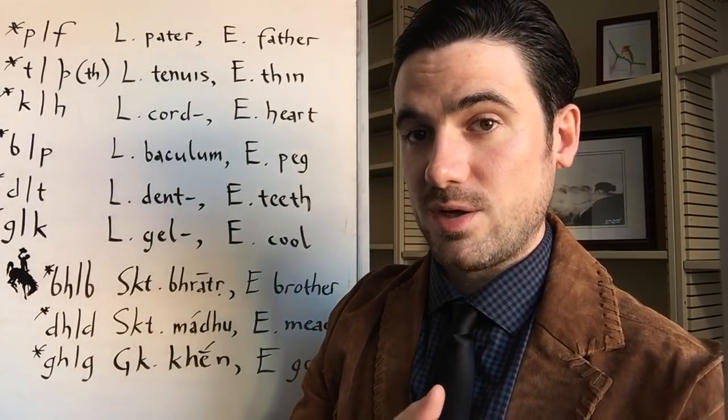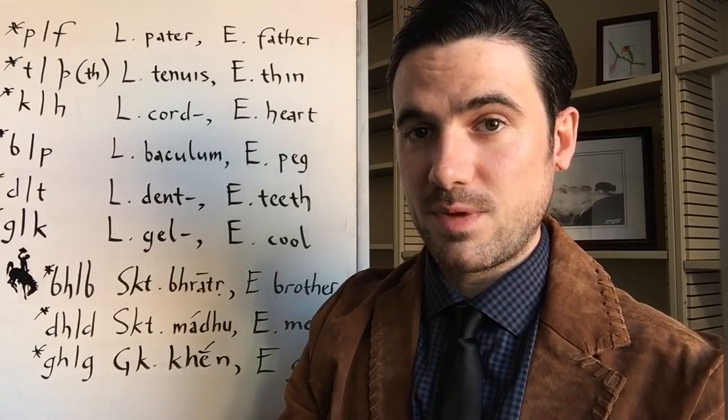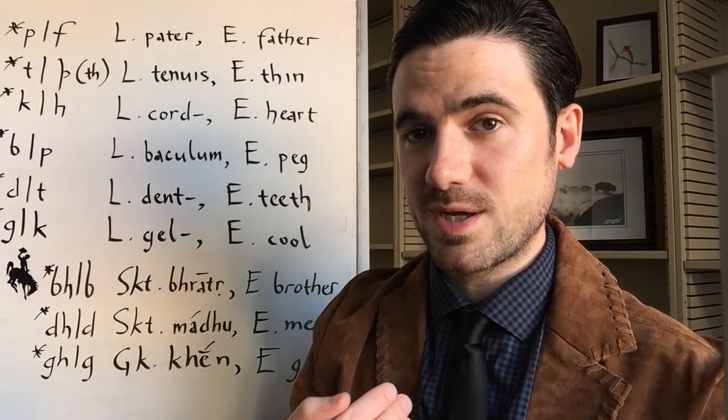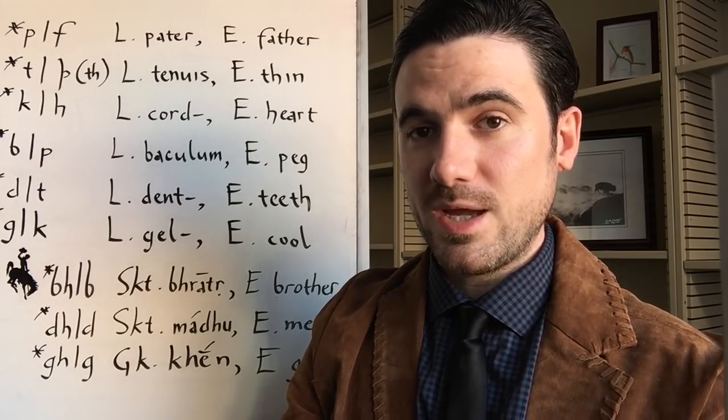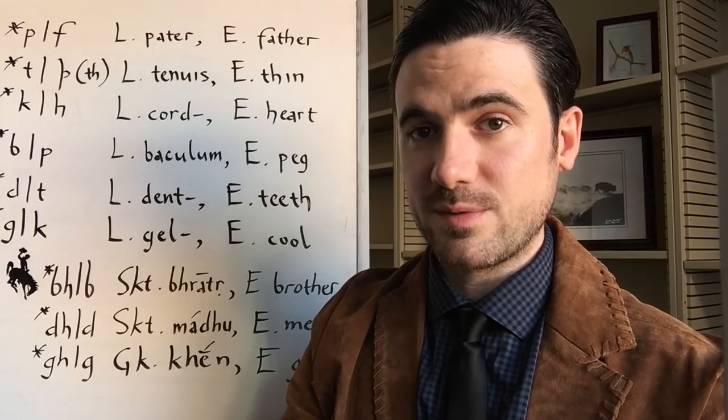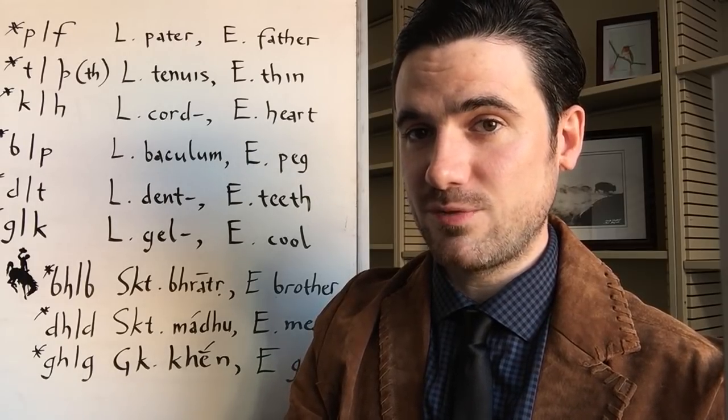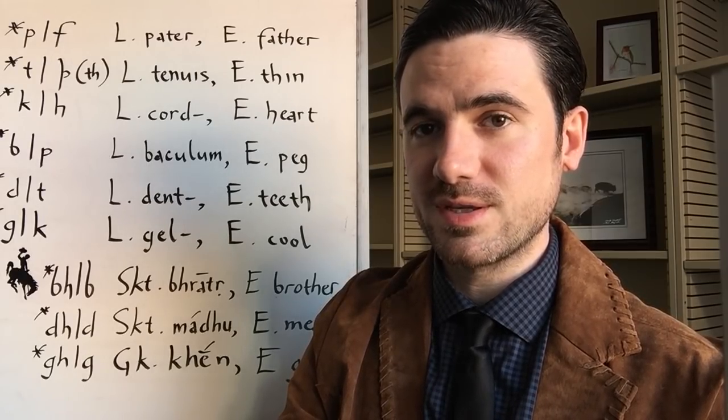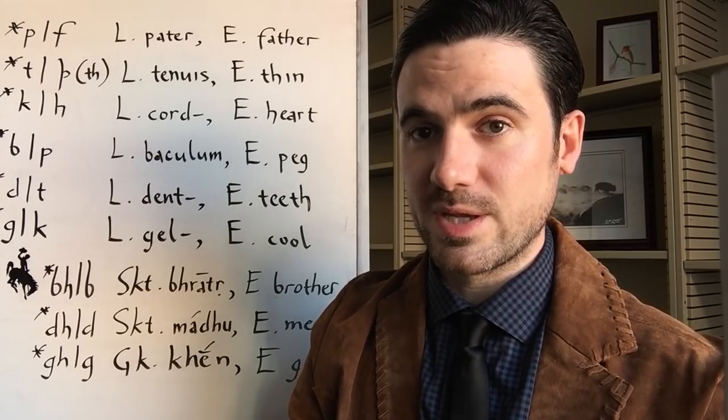But basically along the way to becoming the Germanic languages, the Indo-European language in Northern Europe had certain consonant changes occur, and these consonant changes are called Grimm's Law. And today you can look at a Germanic language like English and look at the consonants, especially at the beginning of words where there have been fewer sound changes in the ensuing centuries to affect things, and see a regular relationship between those consonants and the consonants in other Indo-European languages.